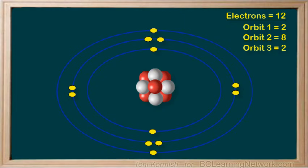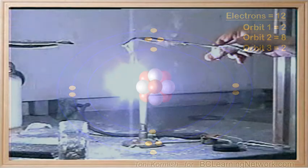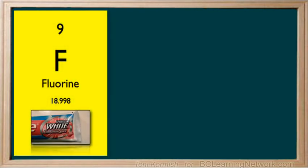Therefore, this atom of magnesium is unstable. Now you do the electron distribution for fluorine. Is fluorine stable or unstable?